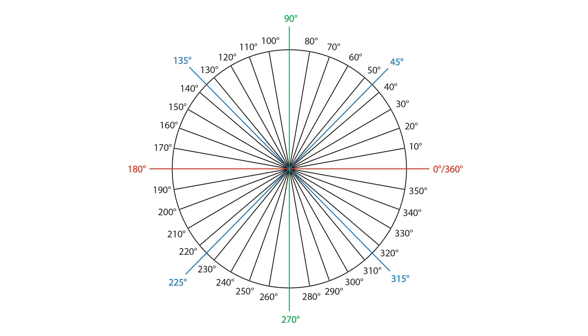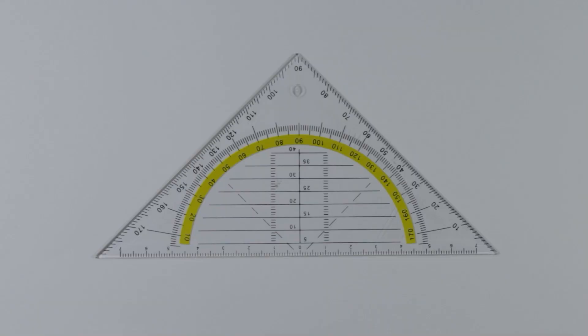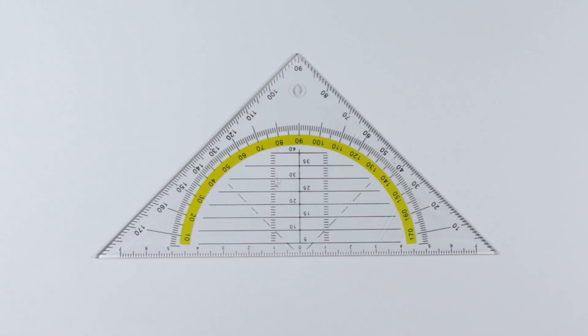The technique is rather simple, and you might have learned it in school already. One triangle, also called a triangular protractor, has a degree scale.